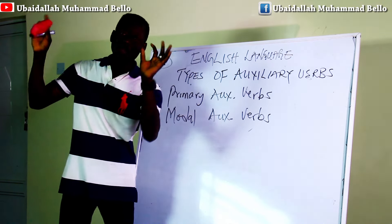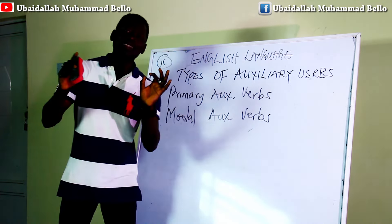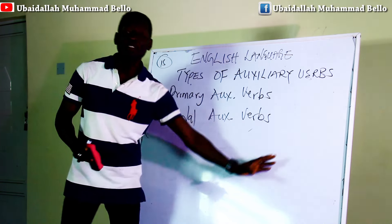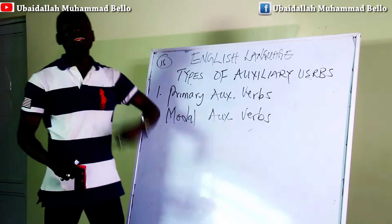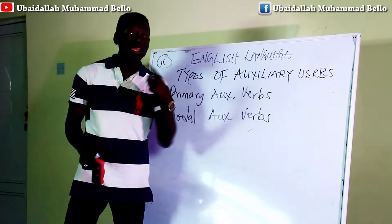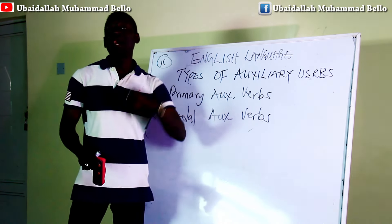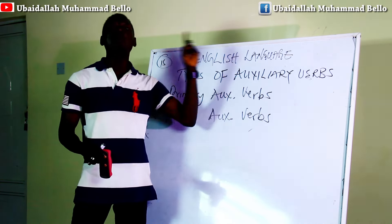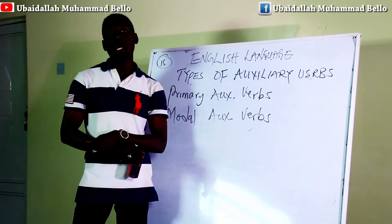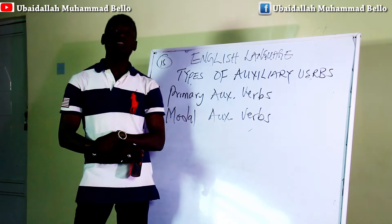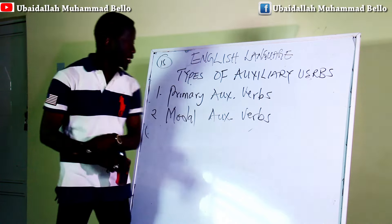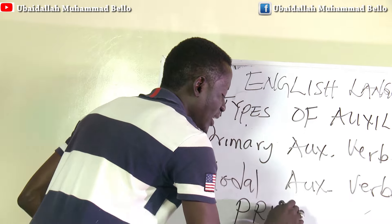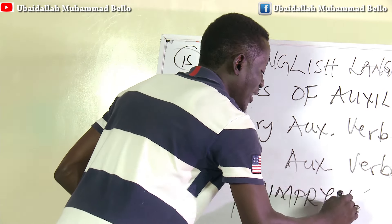We have to take them one after the other to find out what lexical items best exemplify what they mean and how they operate as auxiliaries to main verbs in our sentences. Let's start with the first one: primary auxiliary verbs.